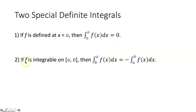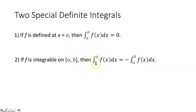The second special definite integral says if f is integrable on the closed interval from a to b, then the integral from b to a of f of x dx equals the negative of the integral from a to b of f of x dx. If you switch your lower and upper limits of integration, you have to put a negative sign out front. This usually occurs when your lower limit is greater than your upper limit, like b equals five and a equals zero. Since you can't integrate backwards, you flip your limits and put a negative sign out front.